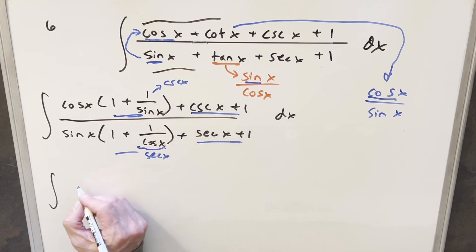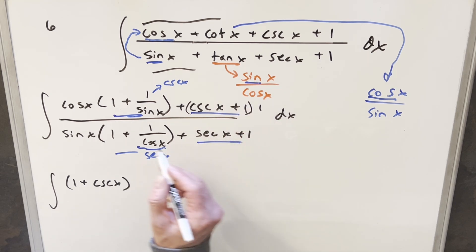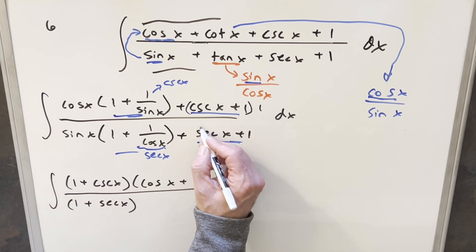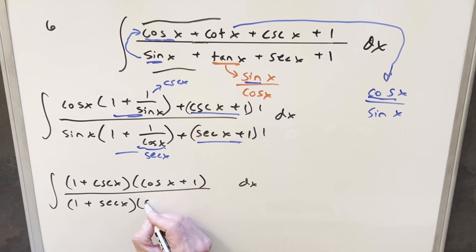So rewriting again, factoring out a 1 plus cosecant x here, we can write this as cosecant x plus 1 times 1. So when we factor that out, this other piece is just going to become cosine x plus 1. And then doing the same kind of thing in the denominator, we factor out 1 plus secant x, and then we'll create a little 1 right here. And so this is going to be, for our other term, this is going to be sine x plus 1.